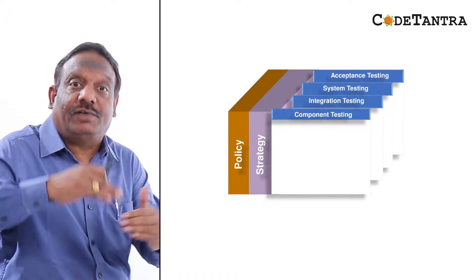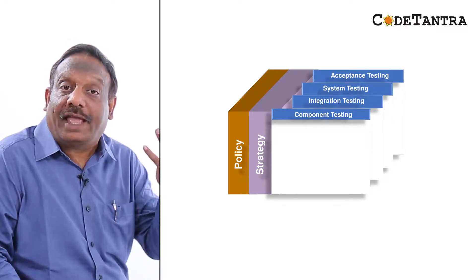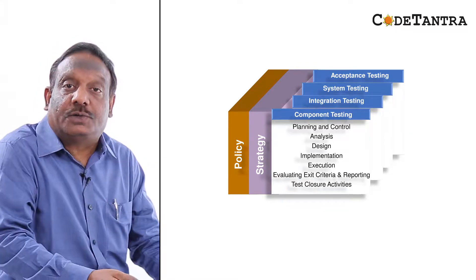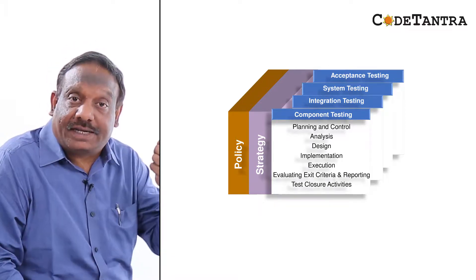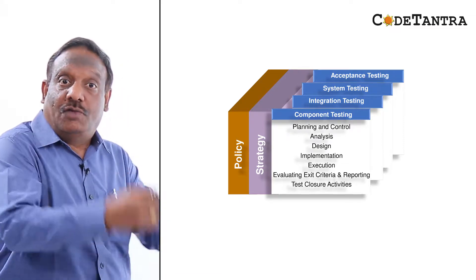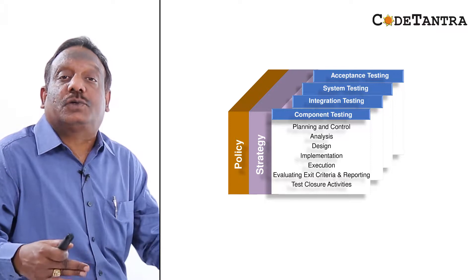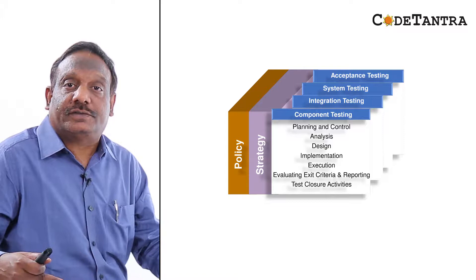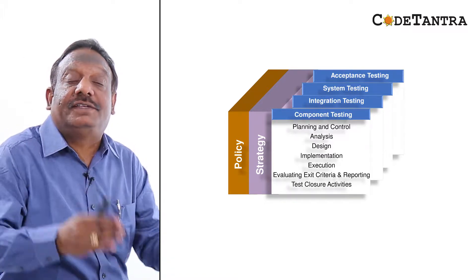For each of these levels of testing, a fundamental test process is applied. The activities involved in the fundamental test process include: planning and control, test analysis, test design, test implementation, test execution, evaluating exit criteria and reporting, and then test closure activities. This fundamental test process applies irrespective of your SDLC model.